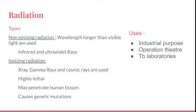Radiation types include non-ionizing (infrared and ultraviolet rays, wavelength longer than visible light) and ionizing (X-rays, gamma rays, cosmic rays). Ionizing radiation is highly lethal, can penetrate human tissues, and causes genetic mutations, so caution is required. Radiation is mostly used in industrial settings, operation theaters, and TB laboratories to kill Mycobacterium tuberculosis.